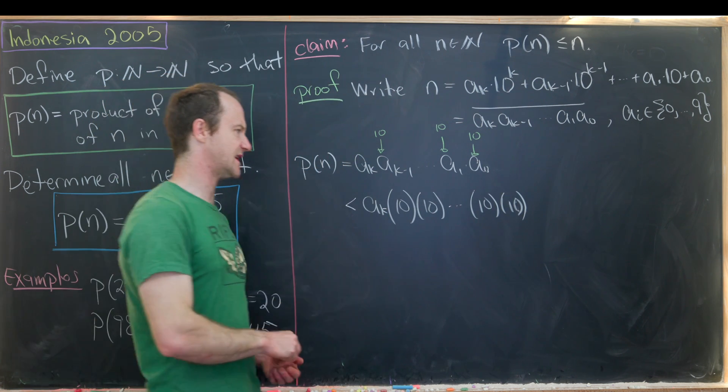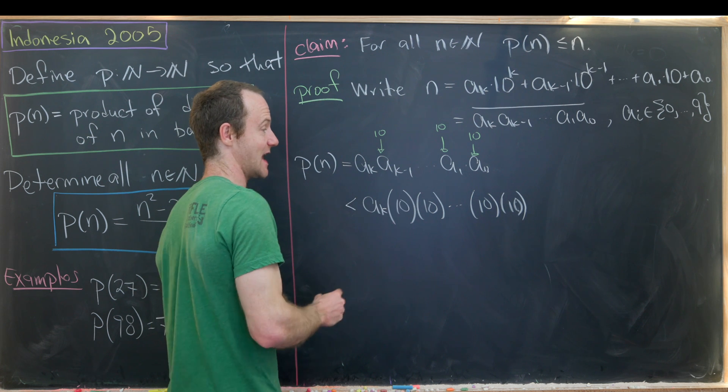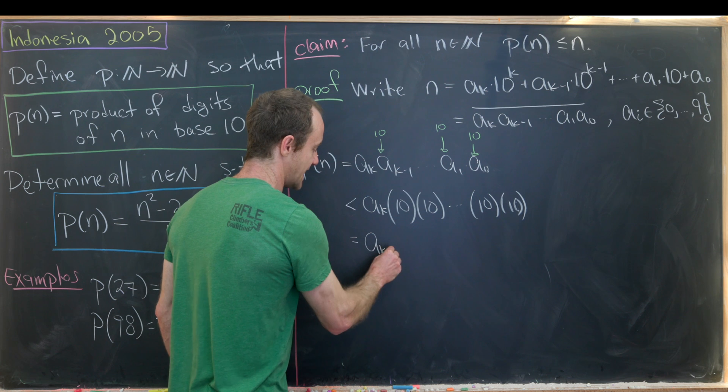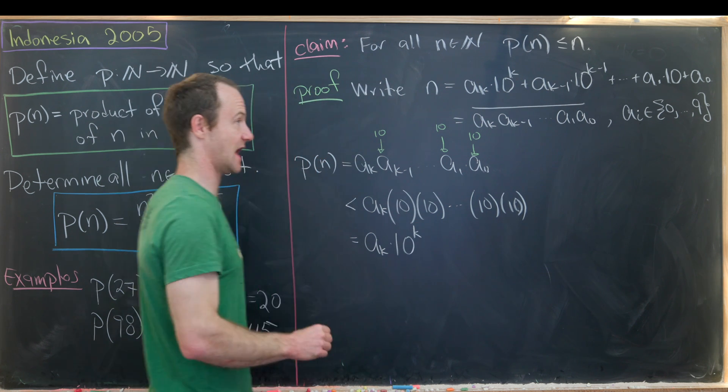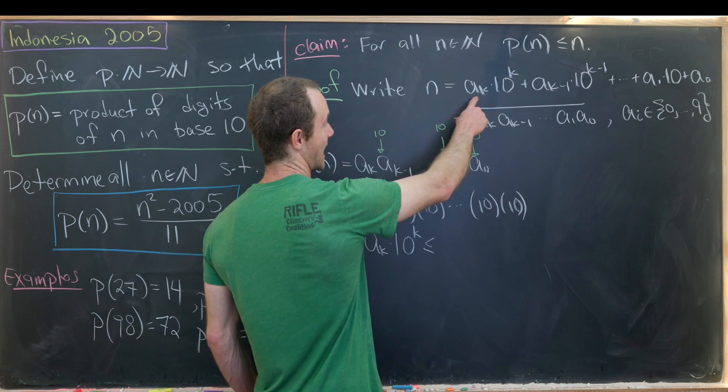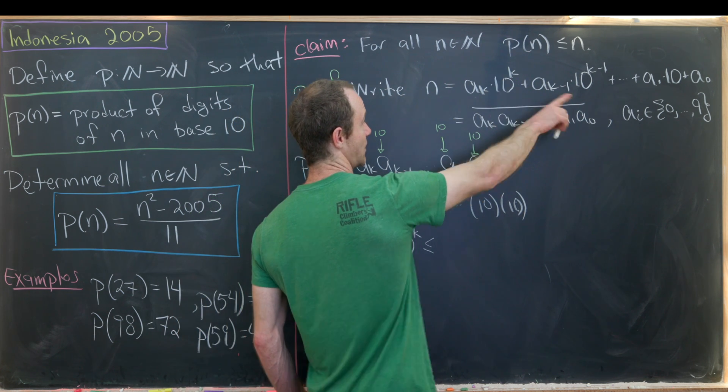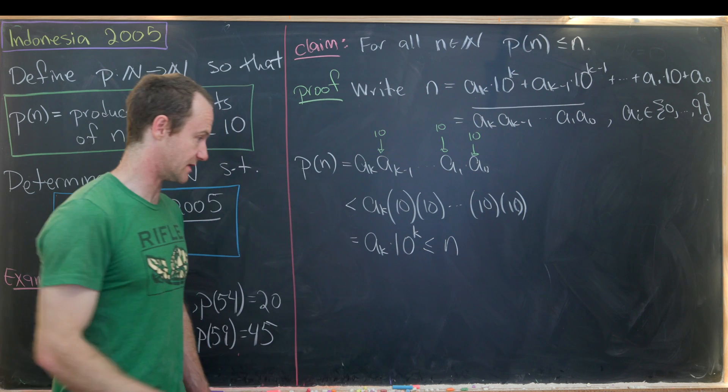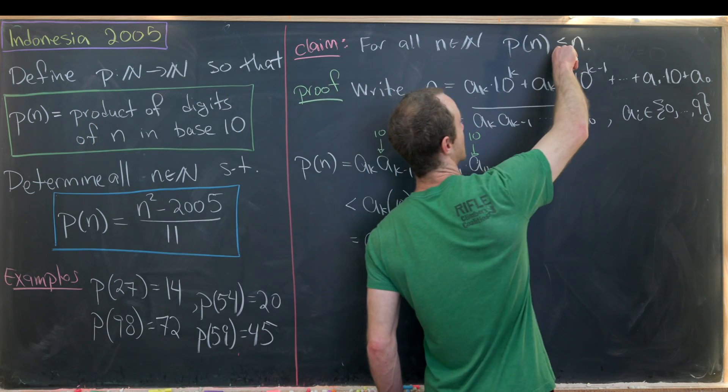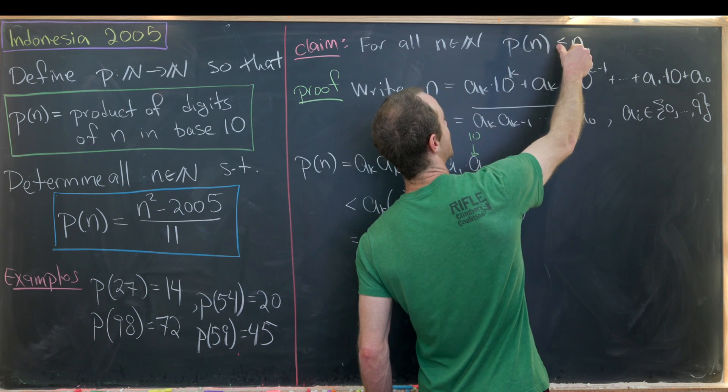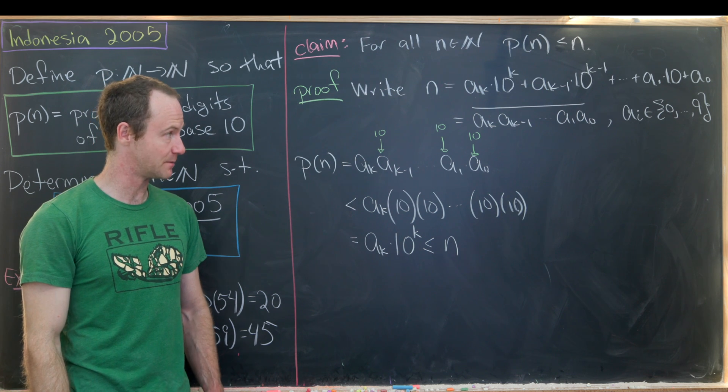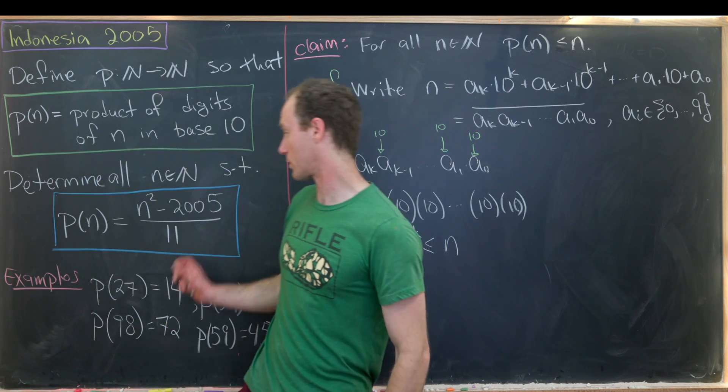Okay but let's see how many 10s do we have? We have exactly k 10s. We're counting from 0 to k minus 1. So this is going to be a sub k times 10 to the k. But that's less than or equal to our a sub k times 10 to the k plus all of the rest of the stuff which is equal to n. So I guess the inequality that we've actually built is a tiny bit stronger. We have that p evaluated at n. In other words the product of the digits of n is strictly less than n. So let's see how we can use that to solve our problem.